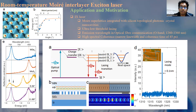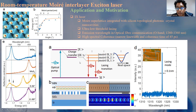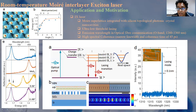Moiré heterostructures and moiré superlattices have very good applications in moiré exciton lasers. In one particular work, researchers integrated a moiré superlattice into a silicon topological photonic crystal and demonstrated very good lasing performance. The emission wavelength is within the optical fiber communication range, and the output has very high spectral coherence with a very narrow linewidth and high coherence time.